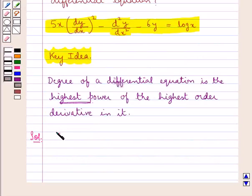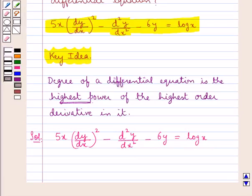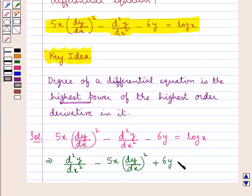The given differential equation is 5x(dy/dx)² - d²y/dx² - 6y = log x. This could be rewritten as d²y/dx² - 5x(dy/dx)² + 6y = -log x.